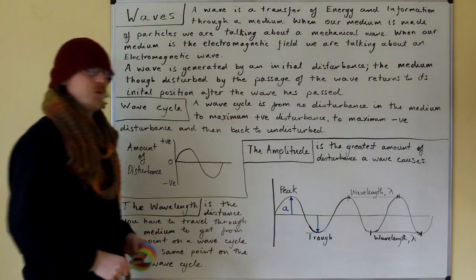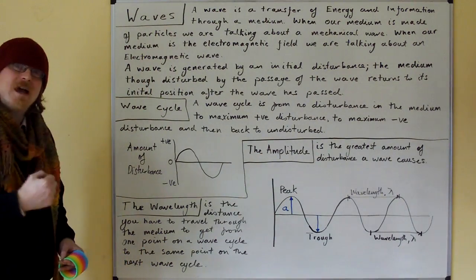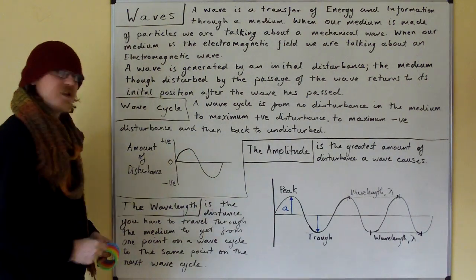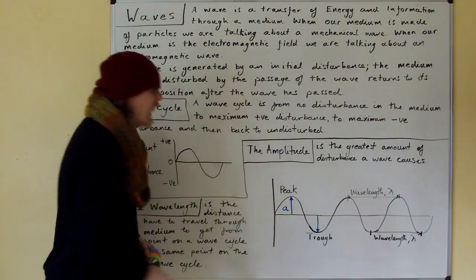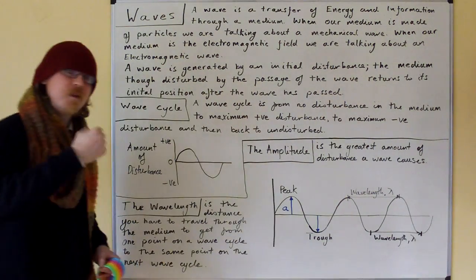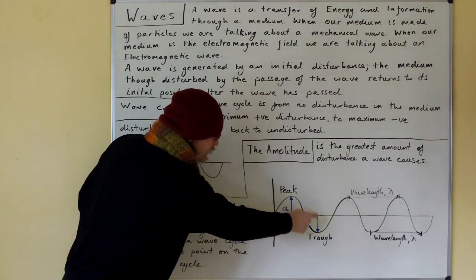The amplitude is the greatest amount of disturbance a wave causes. The maximum positive disturbance is called the peak. The maximum negative disturbance is called the trough. And at the peak and at the trough we have an amplitude.